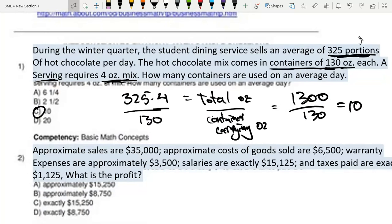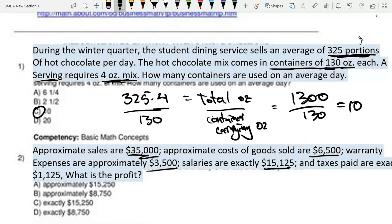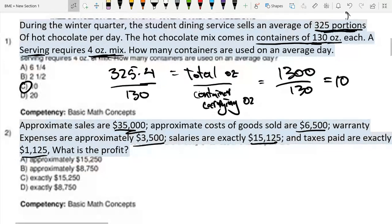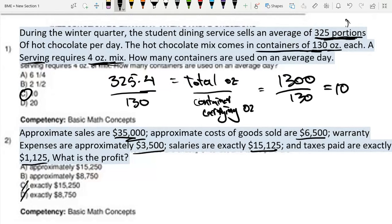The next question: approximate sales are $35,000, approximate costs of goods sold are $6,500, warranty expenses are approximately $3,500, salaries are exactly $15,125, and taxes paid are exactly $1,125. What is the profit? We can instantly rule out option C and D because it's not going to be exactly, since our sales are approximate and sales are part of profit. So it's between $15,000 and $8,750.